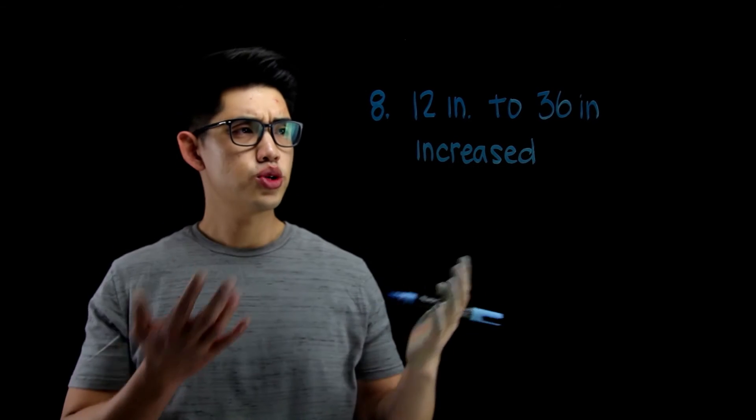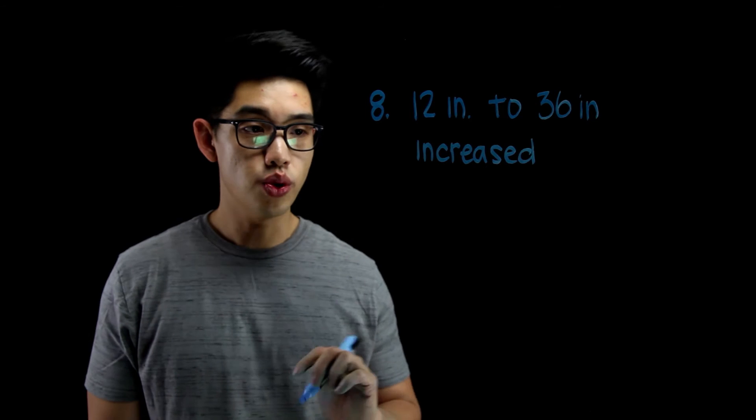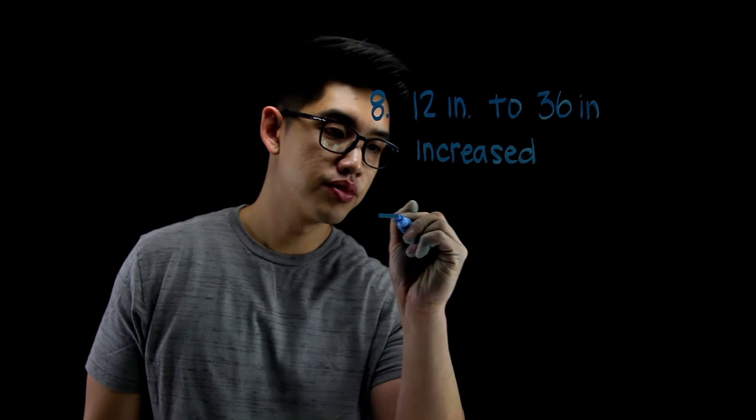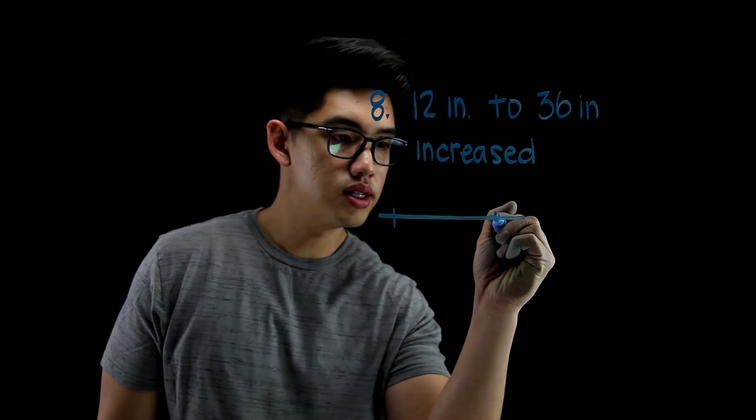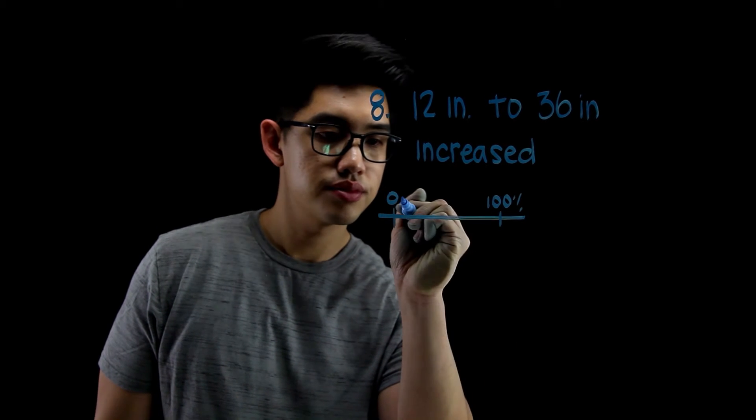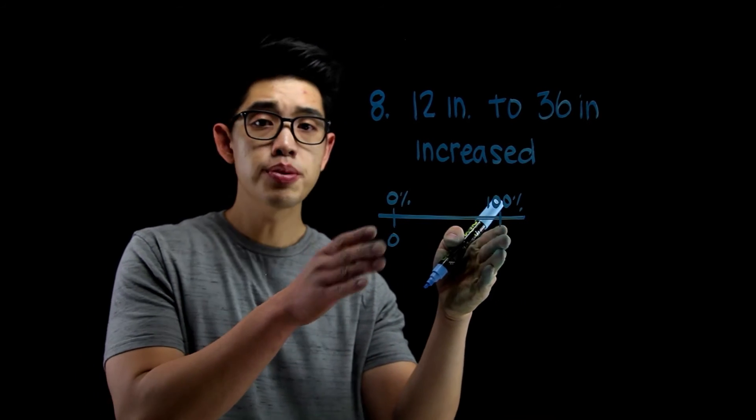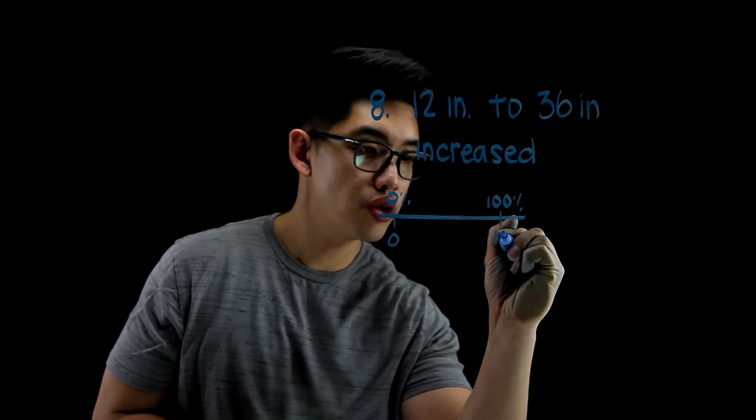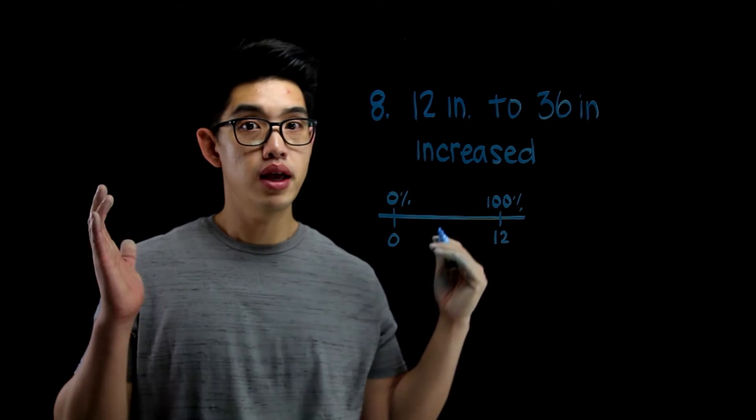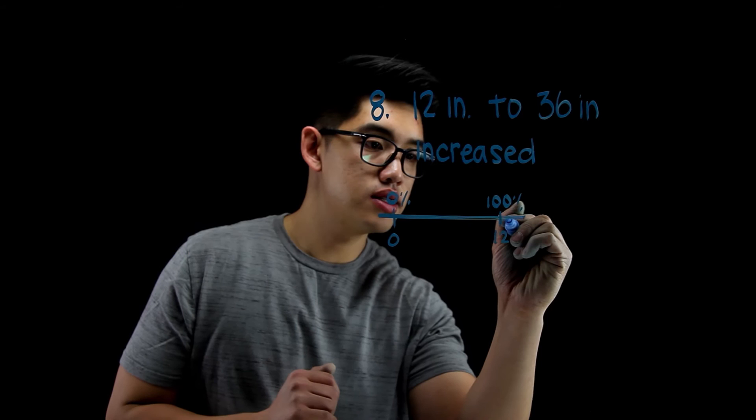And then, I need to try to figure out by what percent. So for those of you guys who are visual learners, I can draw a number line. I can say from here to here, this is zero percent. This is 100%. This is zero. And 100% is 12. You first started off with 12 inches. But wait. It grew. It increased to 36 inches. So let me see.